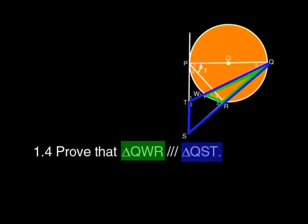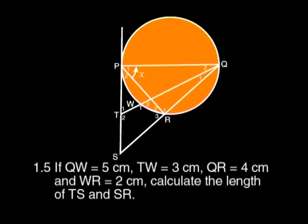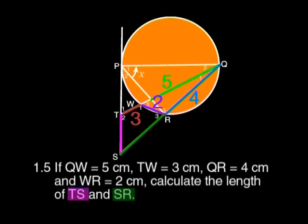1.4: Prove that triangle QWR is similar to triangle QST. 1.5: If QW equals 5 centimeters, TW equals 3 centimeters, QR equals 4 centimeters, and WR equals 2 centimeters, calculate the length of TS and SR.